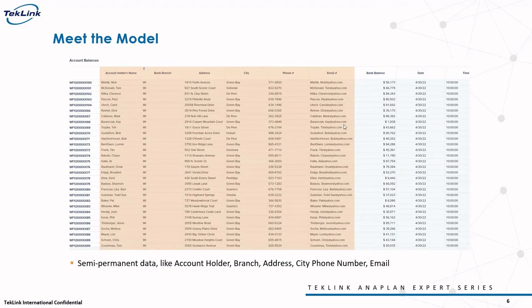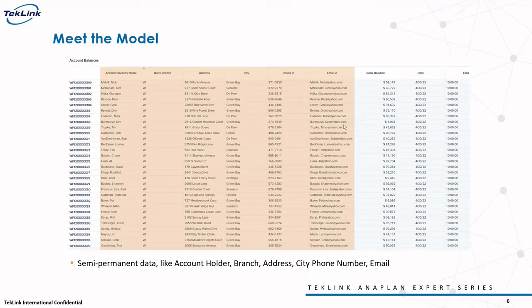Essentially in this model, there are two kinds of data. The first is semi-permanent data — like account holder name, address, city, branch, phone number, and email. We don't really expect this data to change except very periodically; for example, a customer changes their address, phone number, or moves to a different state and thus changes their bank branch. The source of this data is the corporate office, stored on corporate servers, and an update is pushed at the end of every week to reflect these changes. Corporate will often only send the delta data — the data that has changed — so it's important to only update differentiated items.